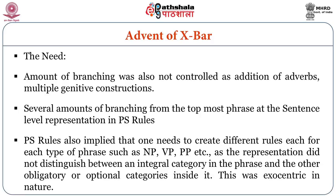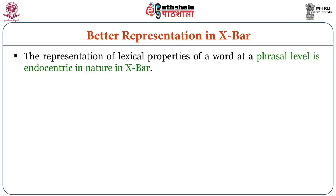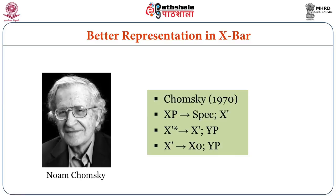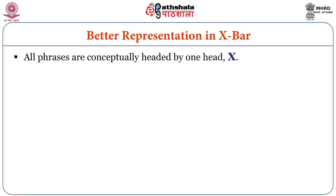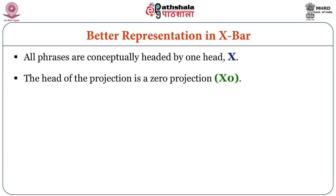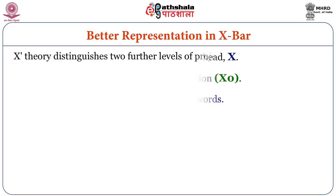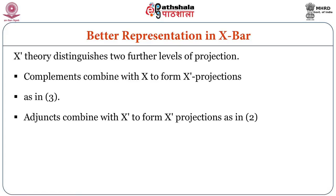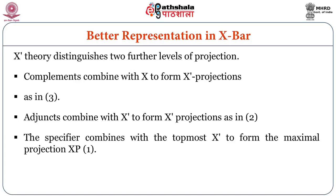The better representation in X-Bar: the representation of lexical properties of a word at a phrasal level is endocentric in nature in X-Bar theory. Those properties are represented at a compositional level higher than the level of its entry in the structure. Chomsky 1970 gave this formula: all phrases are conceptually headed by one head X. The head of the projection is a zero projection. Heads are terminal nodes — they dominate words. X theory distinguishes two further levels of projection. Complements combine with X to form X-bar projections, adjuncts combine with X to form X-bar projections, and the specifier combines with the topmost X to form the maximal projection XP.